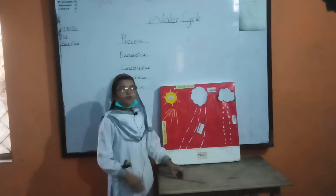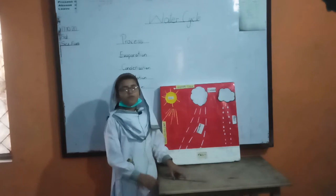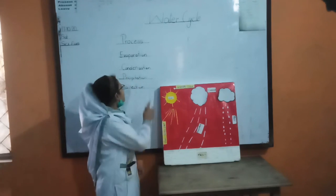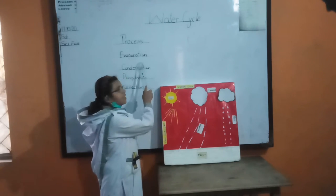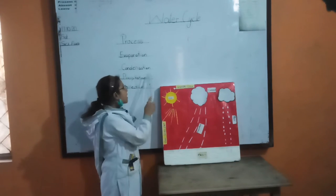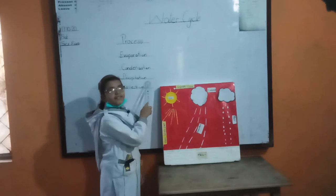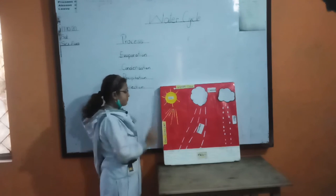There are 4 stages in which water starts its cycle: evaporation, condensation, precipitation, and collection.